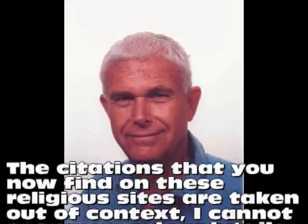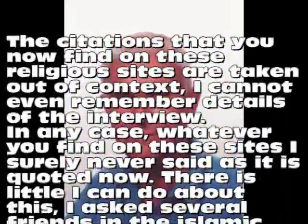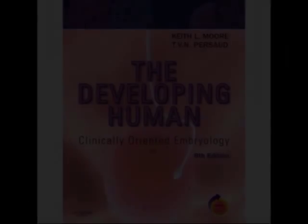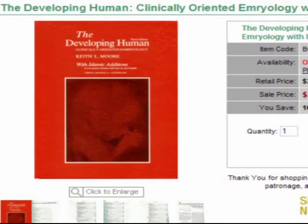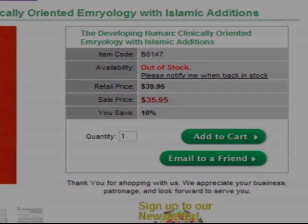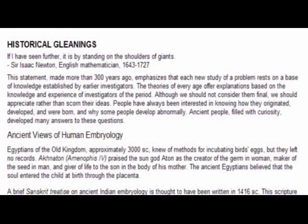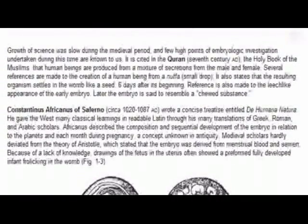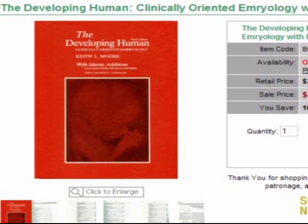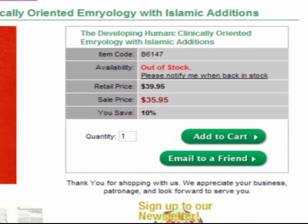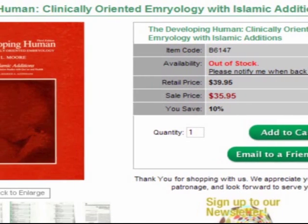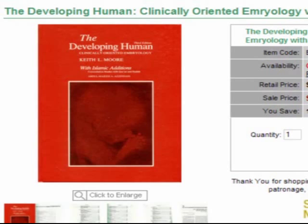What some Muslims are not aware of is that Professor Moore has two very different versions of his book, The Developing Human, for different markets. In the 8th edition from 2007, published by Saunders, there are no references to the Quran or any hadiths — except in the chapter called Historical Gleanings, where he and Persaud refer to the Quran as medieval myth, along with Aristotle, Galen and the Talmud. However, his Islamic version is only available in Islamic libraries and institutions, is 50 pages shorter, and is also called The Developing Human — albeit with 'Islamic editions,' something all Islamic pages forget to mention.